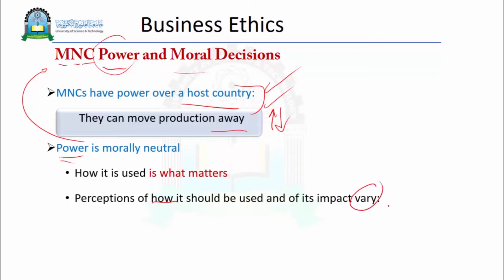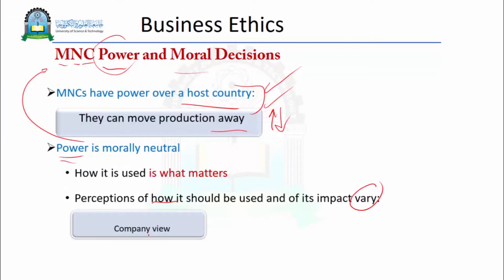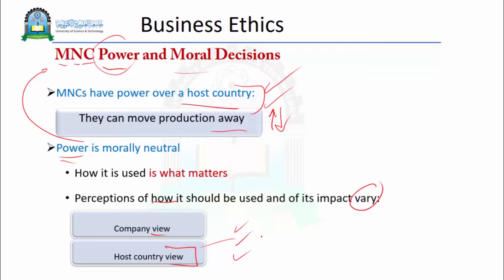Perceptions of how power should be used and its impact can be very different. A company may think of its power as a means of generating profit — this is the company's view. While the country where the company operates may see it totally differently. The power of this company should be used in providing more job opportunities, reducing environmental problems, providing more opportunities for other businesses, and supporting industries to flourish and start their own businesses.